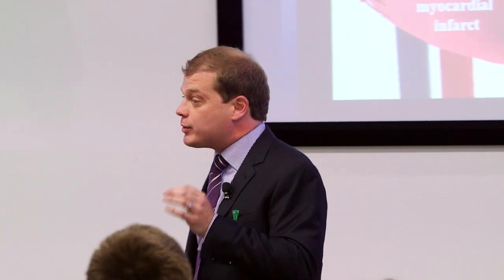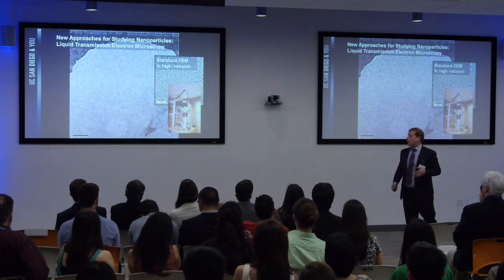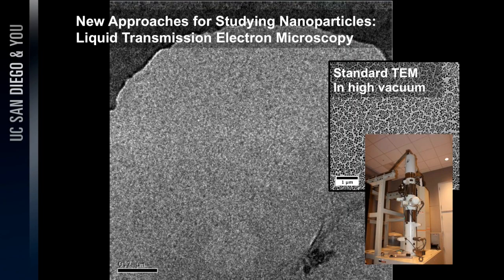In my lab, we spend a lot of time making these things and proving that we made them — they're very, very small. We developed methodologies to actually visualize the particles. This is a high vacuum electron microscope image. Except we don't inject particles into humans or rats in high vacuum — they're in liquids.